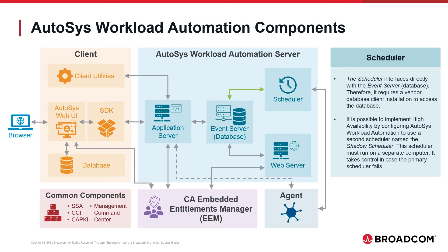Autosys workload automation can implement high availability by configuring a second scheduler called the shadow scheduler. This scheduler must run on a separate computer and takes control in case the primary scheduler fails.